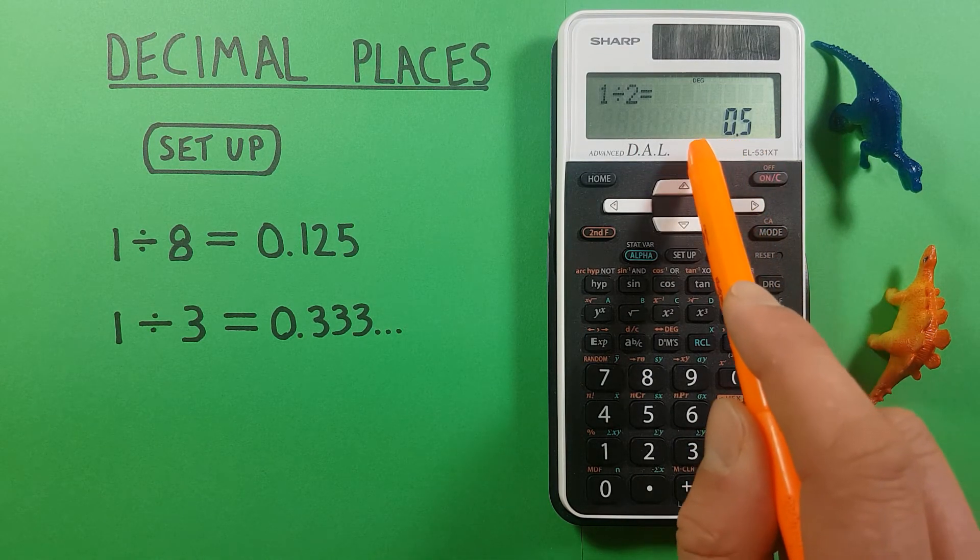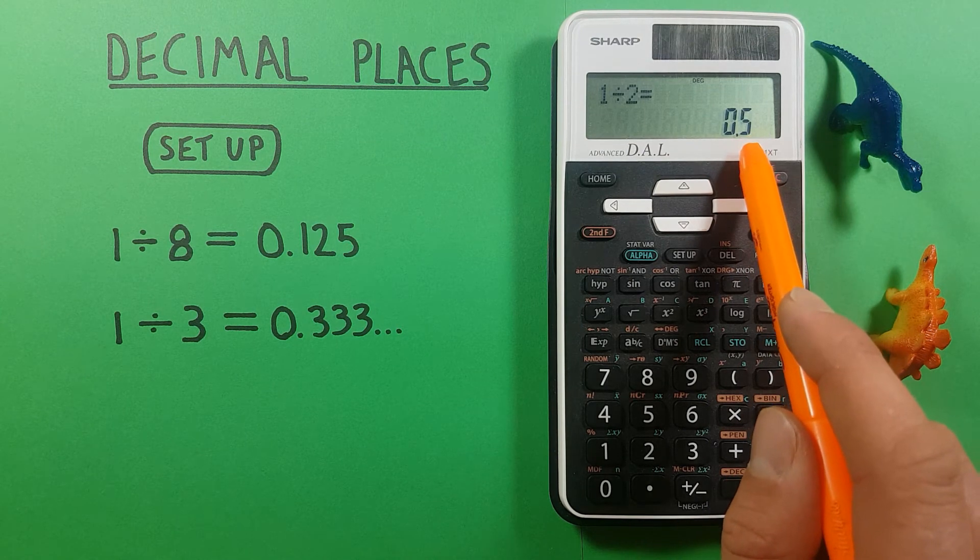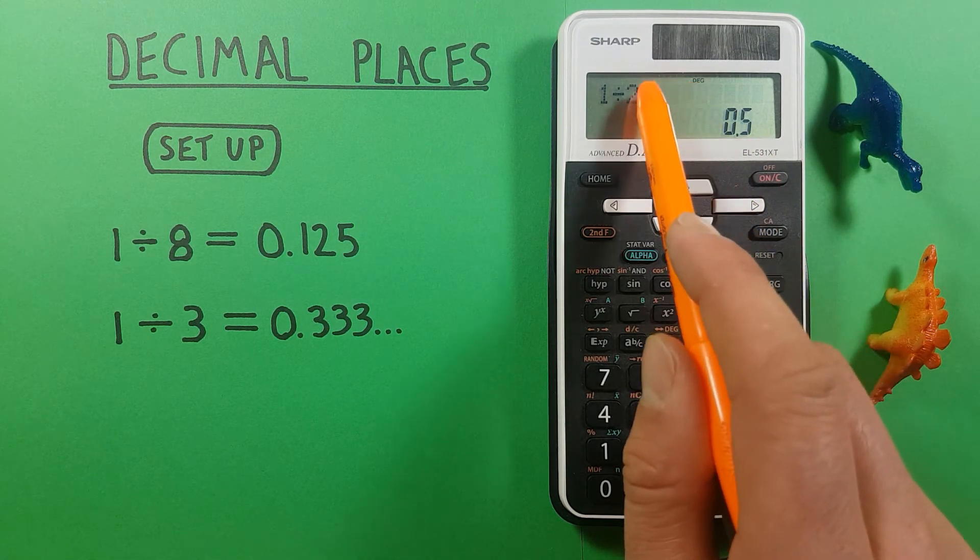You can see now we're back to our normal display screen. We see an answer of 0.5 which is correct and the word fix has disappeared from the top of our screen.